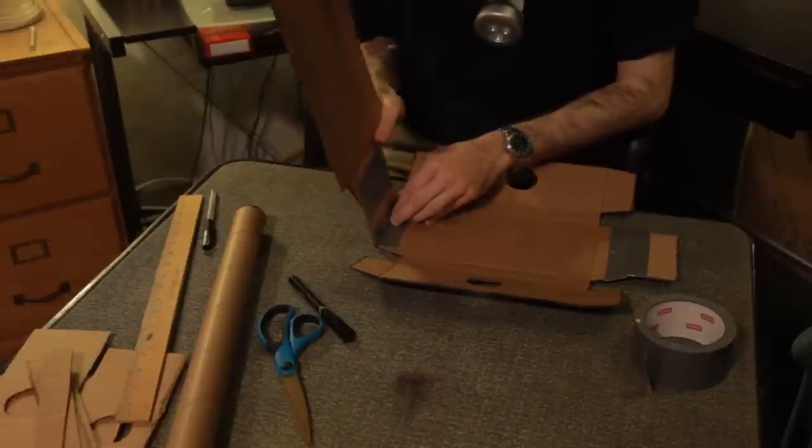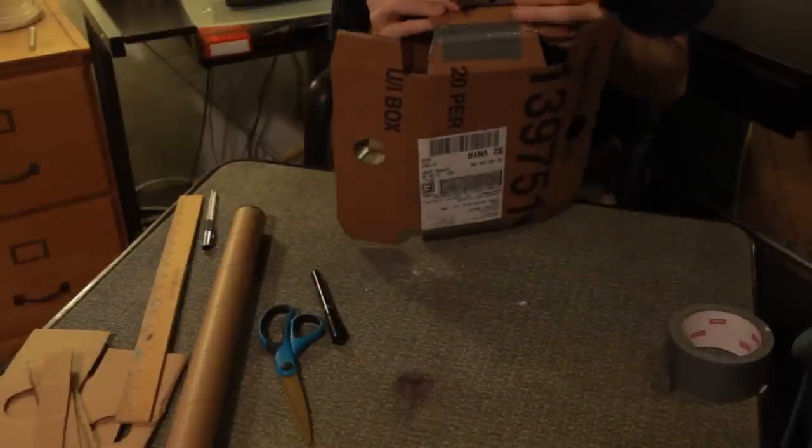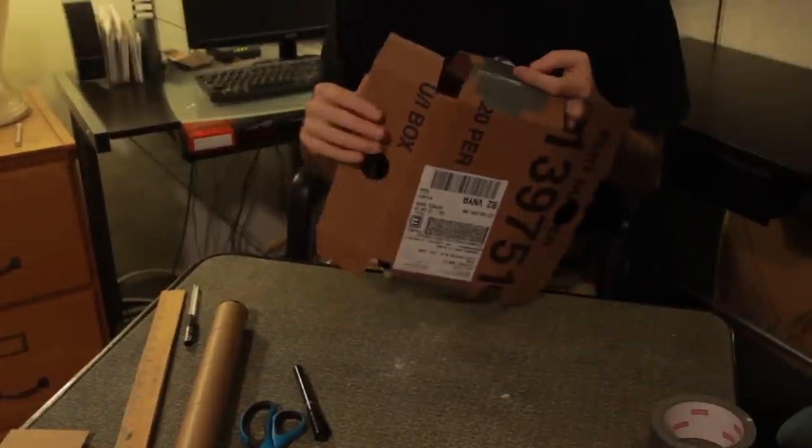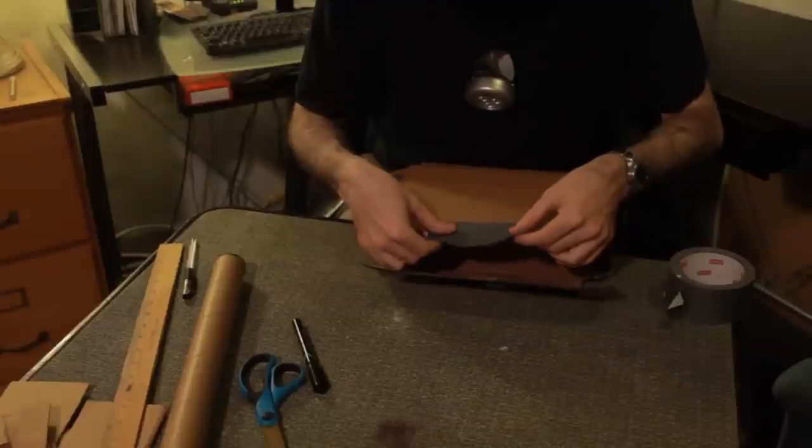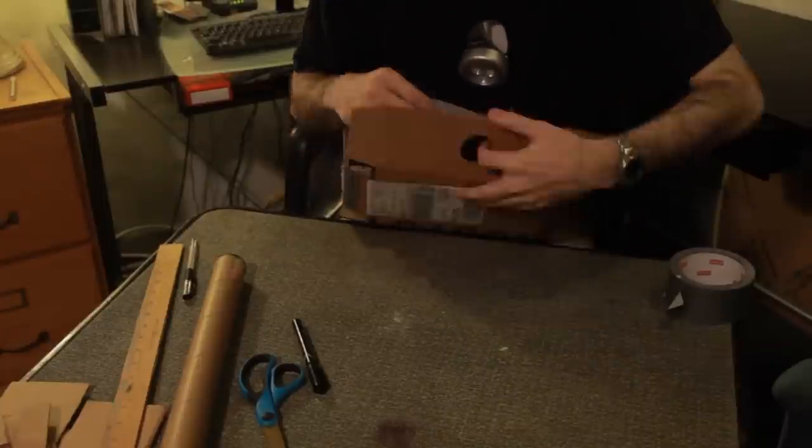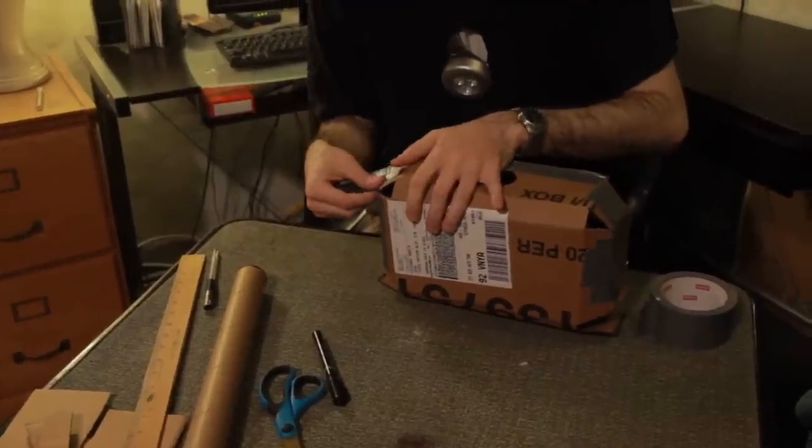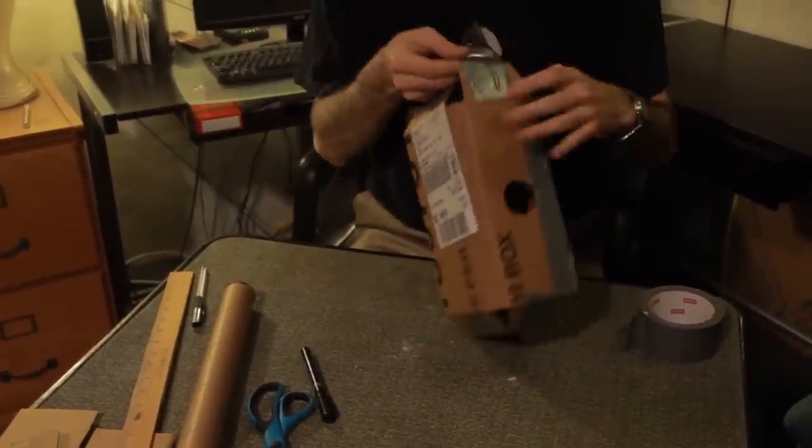Fold the second template piece over the first and duct tape the end to the square piece. Fold the third side inward and use duct tape to secure the flap. Fold all of the side flap pieces inward and duct tape them to the square pieces.